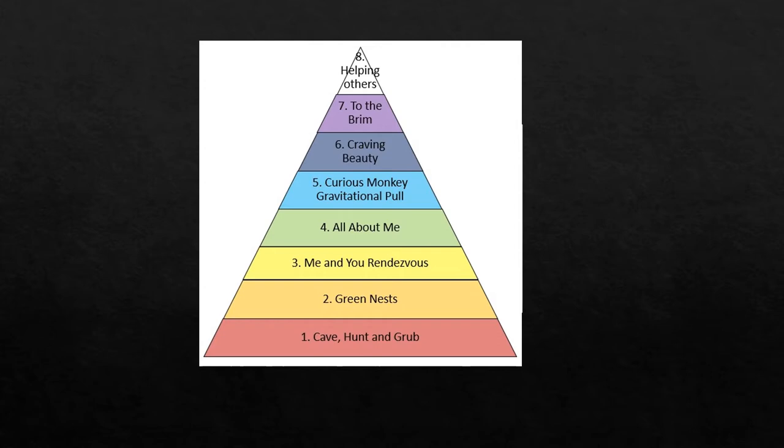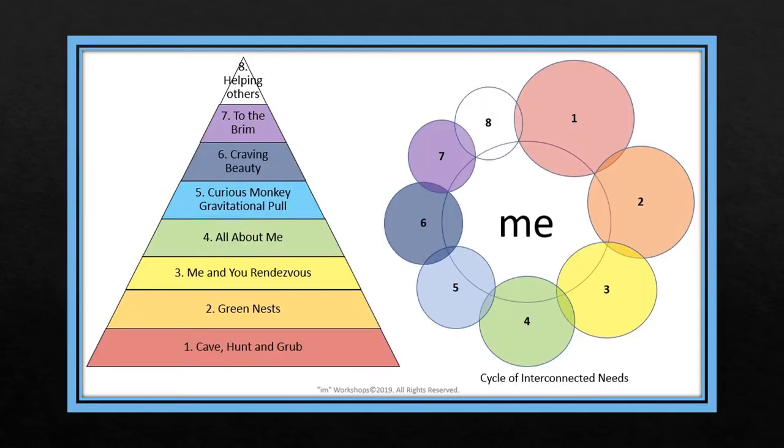Abraham Maslow used a pyramid demonstrating a natural progression of development toward self-actualization. I simply redesigned the pyramid into a cycle and the tiers into circles. Cycle of Interconnected Needs is a newer version of this pyramid. It has been adapted to fit our modern lifestyle.